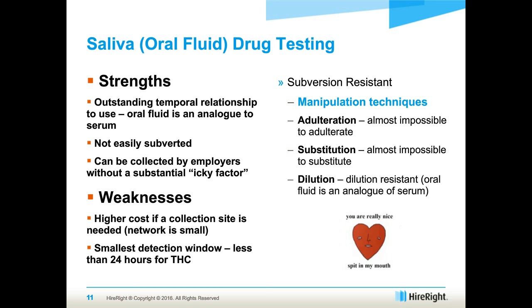Oral fluid can be collected without a whole lot of 'icky factor' — it's essentially like watching someone brush their teeth. The weaknesses are that it does have a higher cost from a laboratory perspective, and a much higher cost if you use a collection network like a local clinic, because clinics generally charge the same rate for oral fluid collection as they do for urine, which massively changes the price point. One of its weaknesses is the relatively smallest detection window for marijuana — less than 24 hours. But it is very subversion resistant — you really can't manipulate it through adulteration, substitution, or dilution.